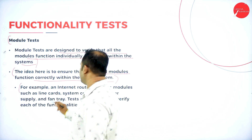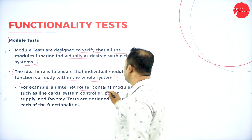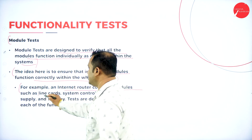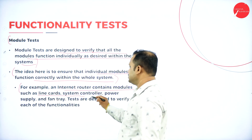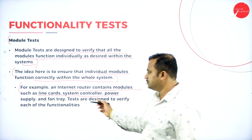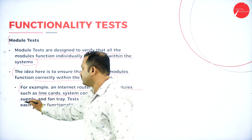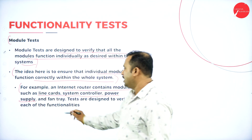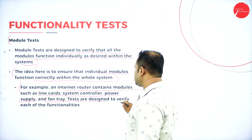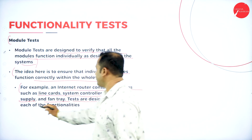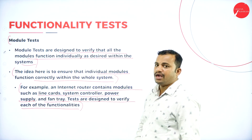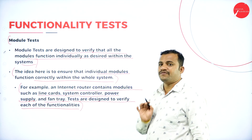For example, an internet router contains modules such as line cards, system controller, power supply, network IC, and fan tray. These tests are designed to verify that each of the functionalities are working according to the requirements.